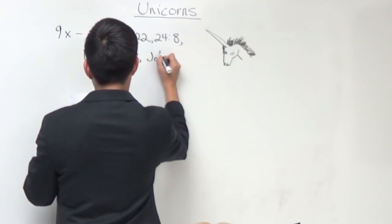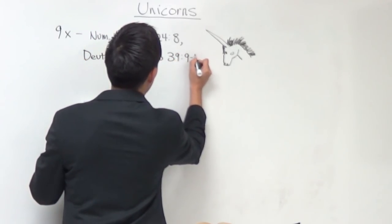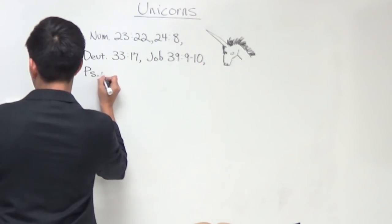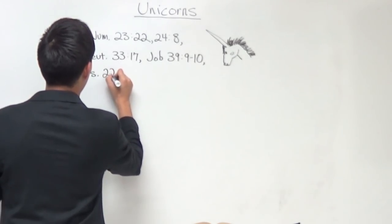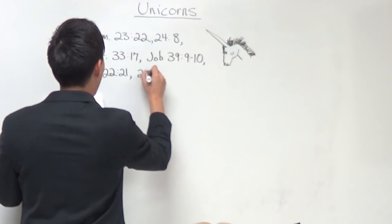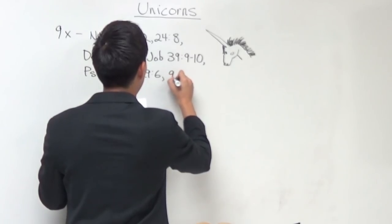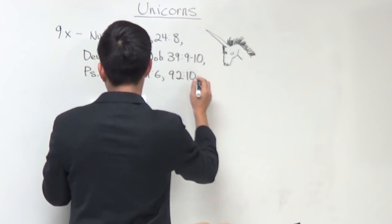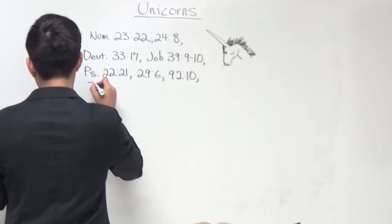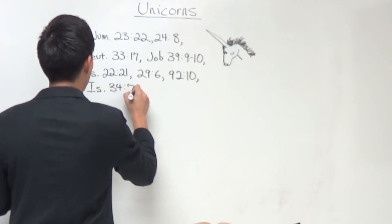Job chapter 39 and verses 9 through 10. The next one will be Psalms chapter 22 and verse 21. The next one is Psalms chapter 29 and verse 6. The other one is Psalms chapter 92 and verse 10. And then the last one is Isaiah chapter 34 verse 7. These are the nine times that the Bible mentions unicorn.